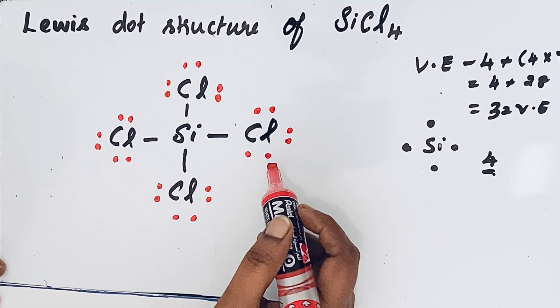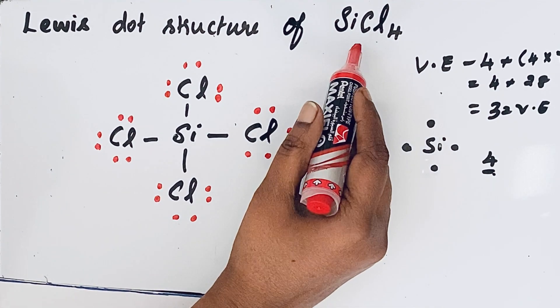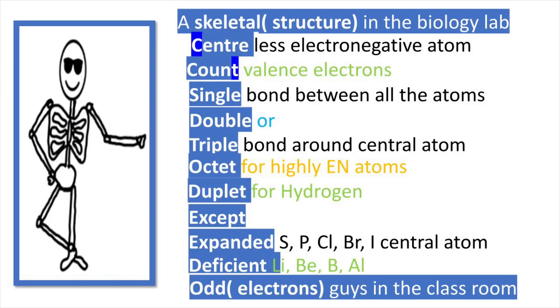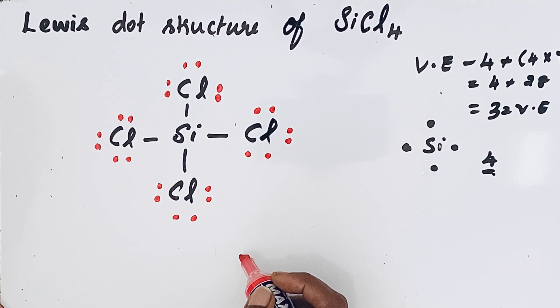Thirty-two valence electrons are involved in the bond formation. This Lewis dot structure of silicon tetrachloride is perfectly right. Let us see that our mnemonic again: skeletal in the biology lab, center, count, single, double, triple, octet, duplet, except expanded, deficient, odd, guys in the classroom. Remember this mnemonic, you can solve Lewis dot structure very easily. Thanks for watching.